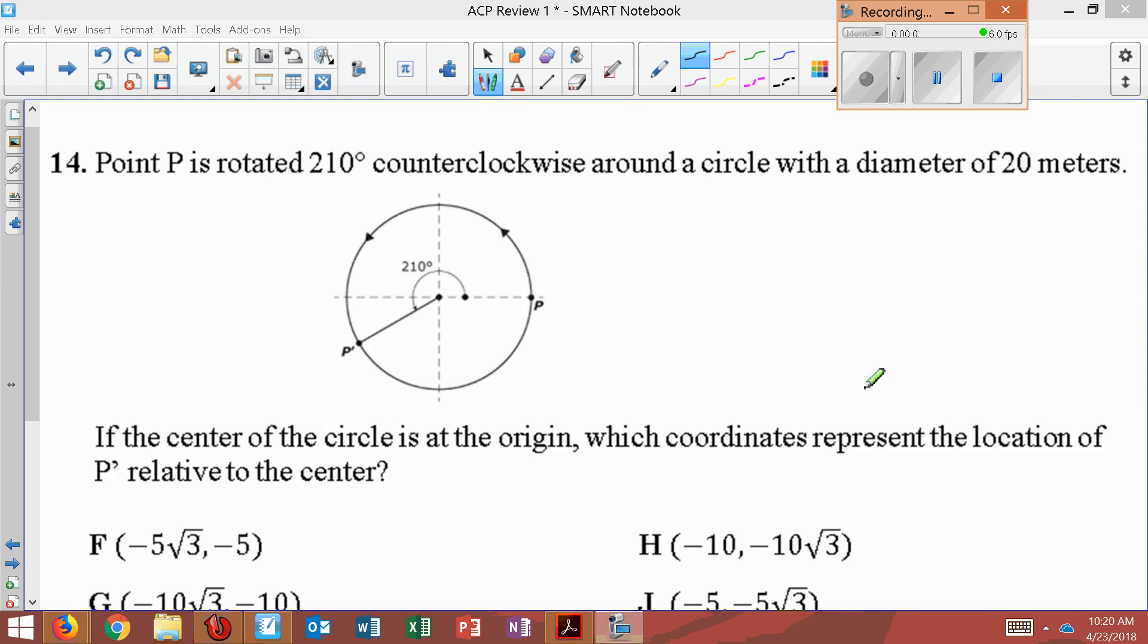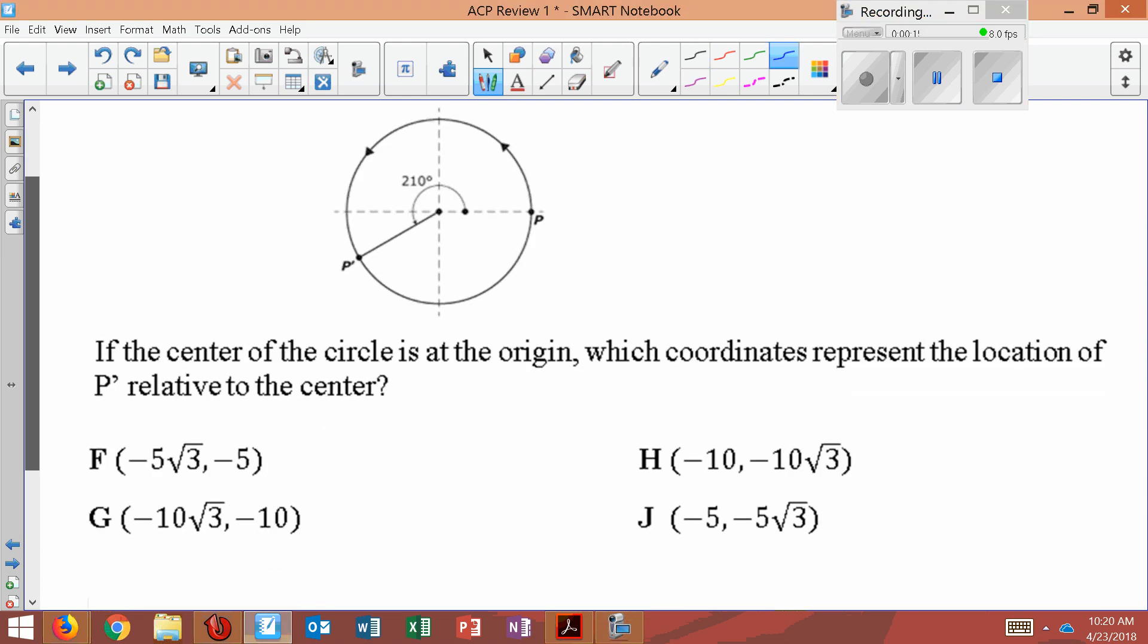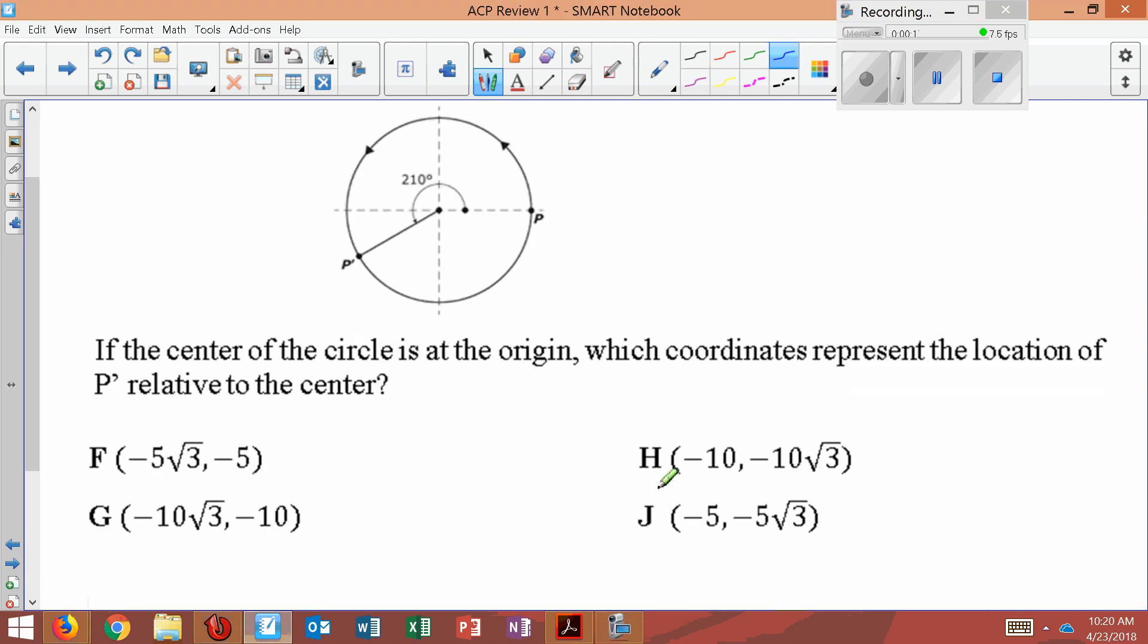Number 14, point P is rotated 210 degrees counterclockwise around a circle with a diameter of 20 meters. If the center of the circle is at the origin, which coordinate represents the location of P relative to the center? Now these points, as you've looked down them, these are all in X and Y coordinates.